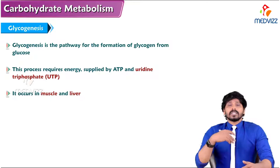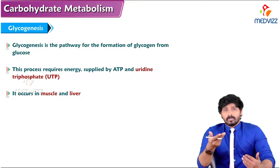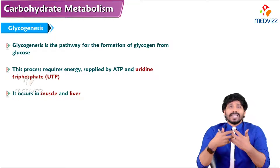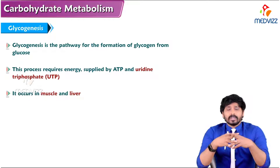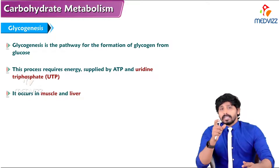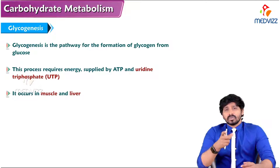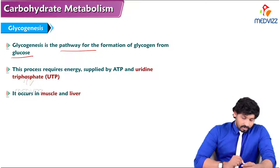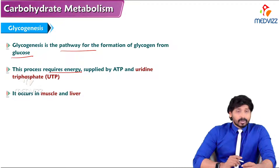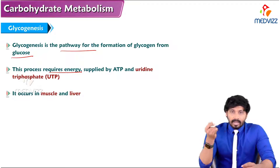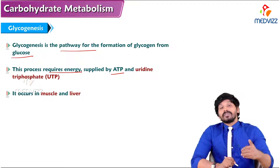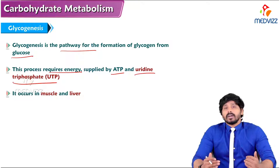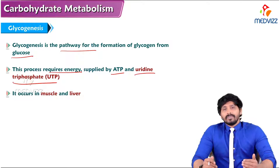Now we'll discuss glycogenesis — the anabolic part. Glycogenesis means when we have excess amounts of glucose molecules and don't require much energy, the excess glucose molecules join together to form glycogen. Glycogenesis is the pathway for formation of glycogen from glucose. This process requires glucose, ATP for energy, and uridine triphosphate (UTP).